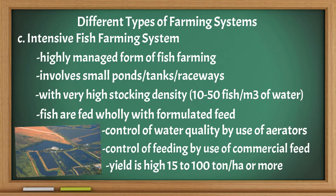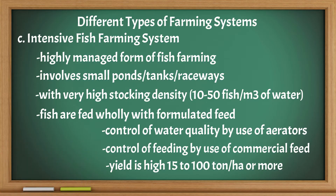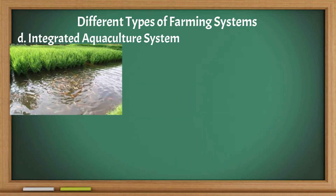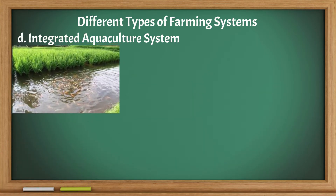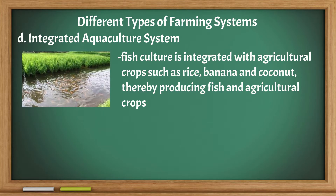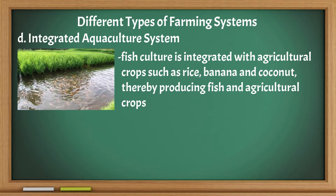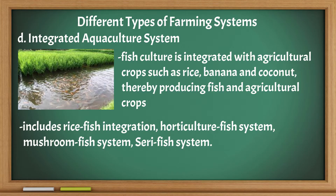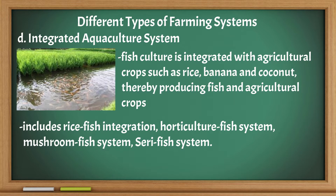The yield in intensive farming is 15 to 100 tons per hectare or more. Integrated Aquaculture System: Fish culture is integrated with agricultural crops such as rice, banana, and coconut, thereby producing both fish and agricultural crops. This includes rice-fish integration, horticulture-fish system, mushroom-fish system, and seri-fish system.